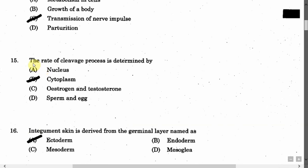The next question is: The rate of cleavage process is determined by — Option A: Nucleus. Option B: Cytoplasm. Option C: Estrogen and testosterone. Option D: Sperm and egg. The correct answer is Option B, that is cytoplasm.